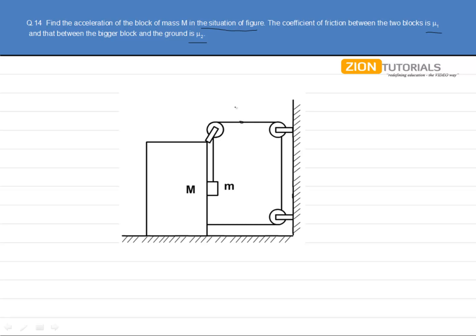Let us assume there is tension T in the string. If this bigger block is moving to the right with an acceleration of A, then this block M must be moving to the right with an acceleration of A while moving downward with an acceleration of 2A.